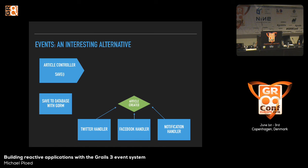Adding Instagram, for instance, just means writing a new handler that registers on the 'article published' event — and that's it. We don't have to change the code of the article controller anymore, which is a very nice and loose coupling.